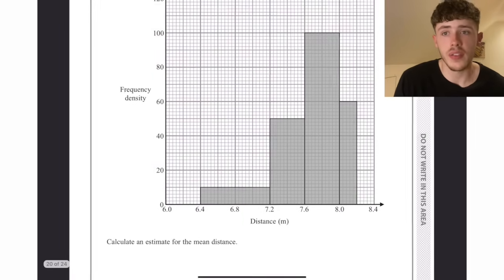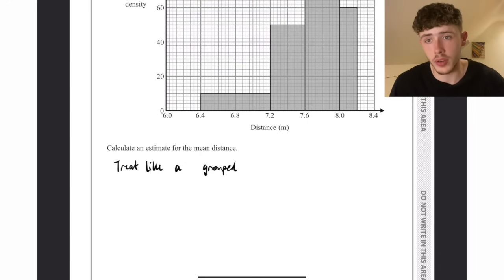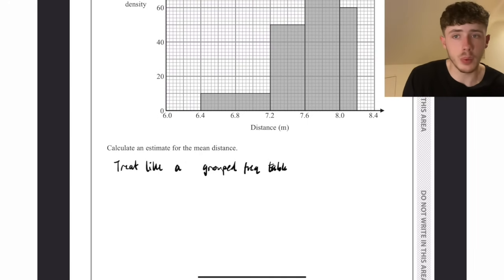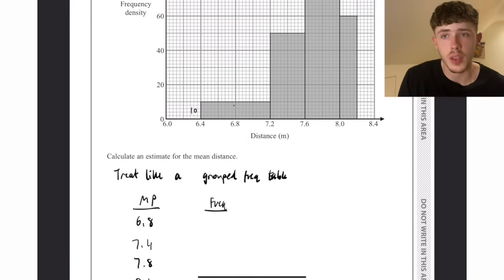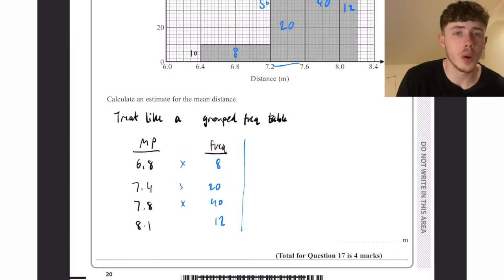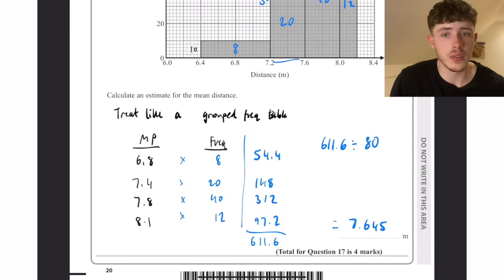Now this is a really tricky question, so we have a histogram and we want to work out the mean distance. Ultimately we want to treat it like a grouped frequency table, because technically histograms come from grouped frequency tables. So the class widths, we want to get the midpoints of them, so I'd write 6.8, 7.4, 7.8 and 8.1, as you can see on the left hand column there, and the frequency we calculate the area of each of those bars. So the class width times the frequency density, ultimately. So we have 8 for the first one, 20 for the second one, 40 for the third, and then 12 for the final one. Write them all down, we want to times those across, so frequency times the midpoint. This is just like adding up all your values before dividing by how many you have. So I've multiplied all those up, if we add them together, we're going to get 611.6, and because there's 80 in total, we divide by 80 and get our mean of 7.645.